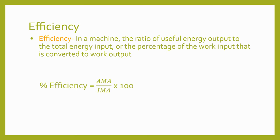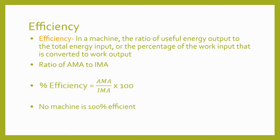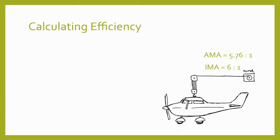The efficiency of a simple machine is the ratio of useful energy output to the total energy input, or the percentage of the work input that is converted to work output. It can be calculated by finding the ratio between the AMA and IMA. Multiplying the result by 100 gives the efficiency as a percentage. An efficiency of 100% would be perfect, but all machines have some energy loss. Designers aim to improve efficiency by reducing the number of moving parts and the friction between those moving parts.